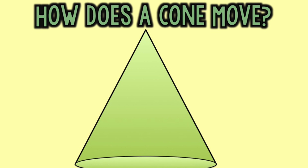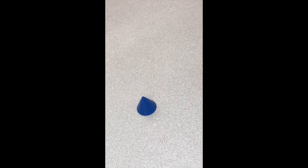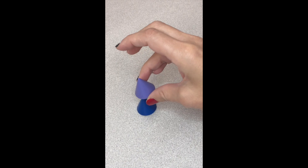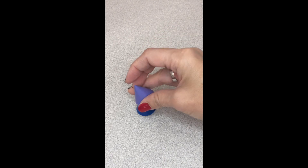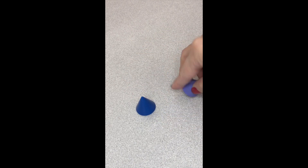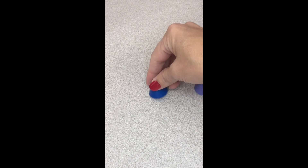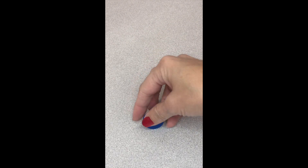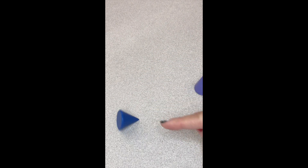How does a cone move? It has a flat face but it doesn't have two, so it has that pointy vertex and it doesn't stack. It does slide because it has a flat face, and it rolls because it has a curved face.